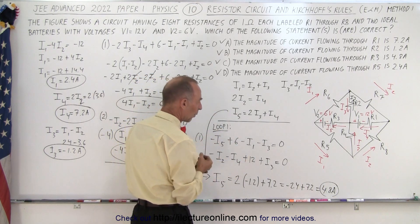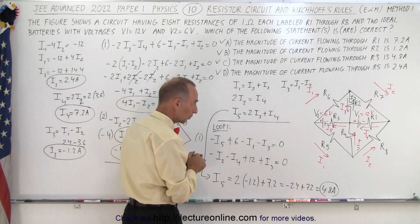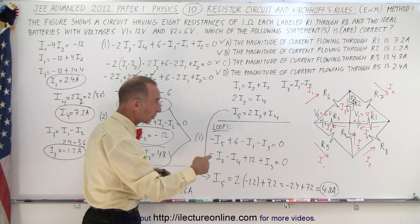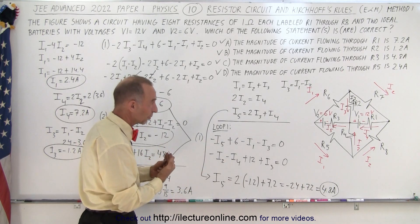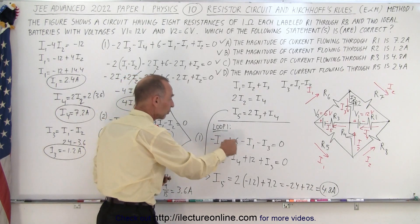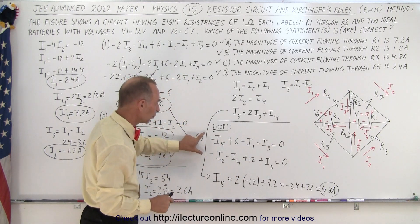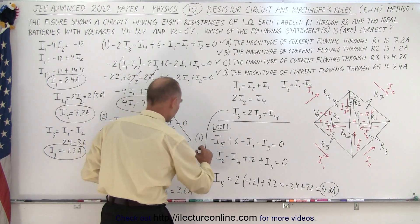Notice that resistance times current gives you voltage. Since all the resistances are 1 ohm, we just simply take the values of the current. Negative, when it's a voltage drop, we go with the current. Positive, when we go against the current, that's a voltage rise. And of course, we have the two voltages, the 6 volt and the 12 volt sources. So we end up with two more equations, equation one and equation two.